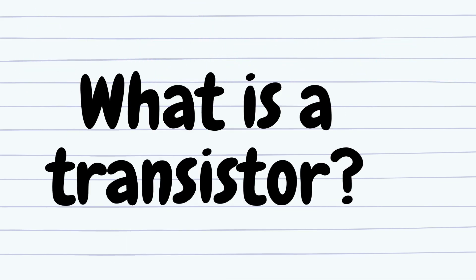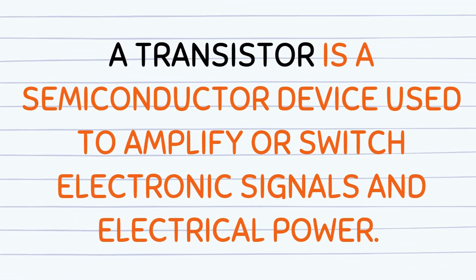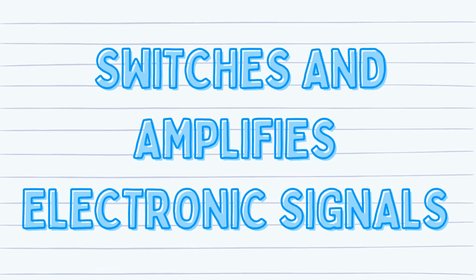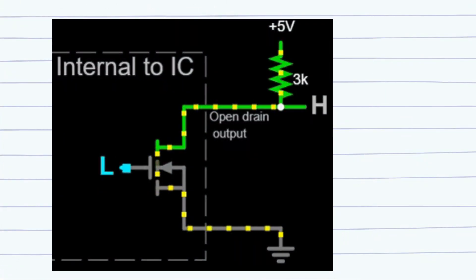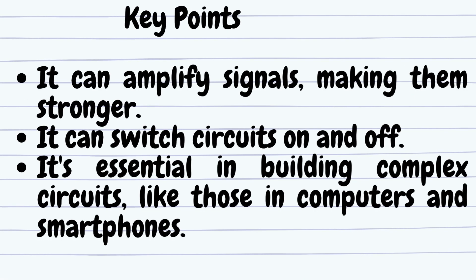What is a transistor? A transistor is a semiconductor device used to either amplify or switch electronic signals and electrical power. Think of it as a gatekeeper that controls whether electricity can pass through a circuit. Key points: it can amplify signals, making them stronger; it can switch circuits on and off; and it's essential in building complex circuits like those in computers and smartphones.